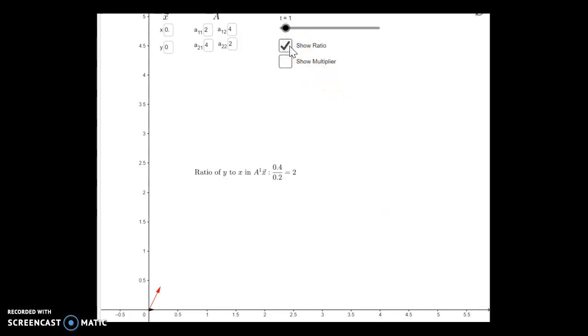And one thing that I want to point out is that, so right now, A to the first times X is the X component is 0.2 and the Y component is 0.4. And we look at the rise to run this 0.4 to 0.2, we get a ratio of Y to X of two. So that's just looking at the vector itself and looking at its Y component relative to its X component.